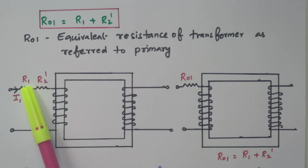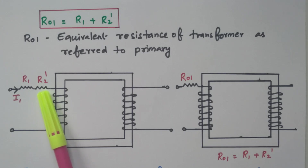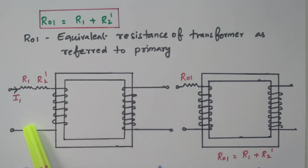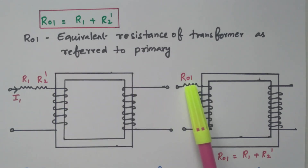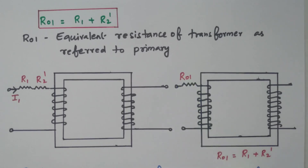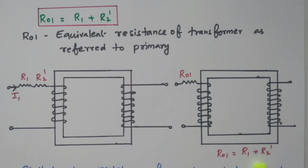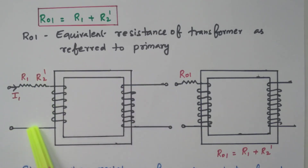See the diagram — R1 is the primary winding resistance, R2 dash is the secondary winding resistance transferred to the primary. Both are connected in series, so they are added together, giving R01. So R01 equals R1 plus R2 dash. Once the resistor is transferred to the primary, any calculation will be easier — we only have R01, which equals R1 plus R2 dash.